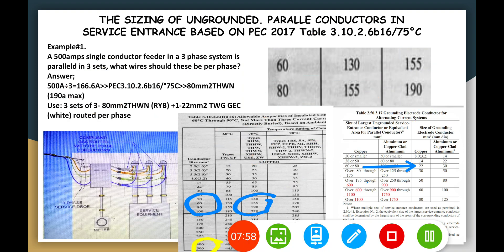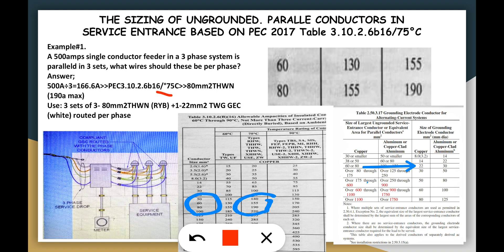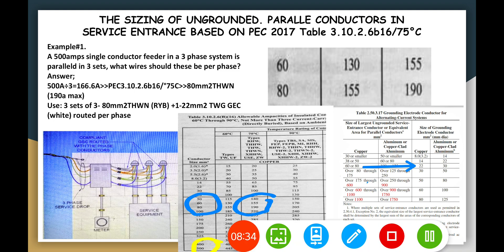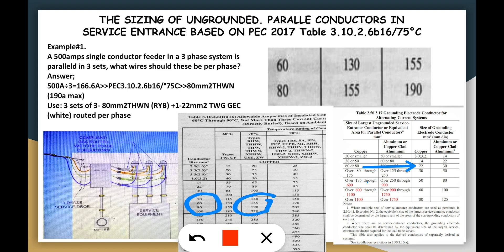So our result for Example 1 is 3 sets of 3×80mm² (R, Y, B phases) plus a 22mm² ground conductor (GEC). This is shown in the table here — the GEC equivalent is 22mm². So we have 3 sets of 3×80mm² THSN plus 1×22mm² WHGEC. Now let us prove that the ampacity of the parallel conductors is higher than that of a large single conductor.